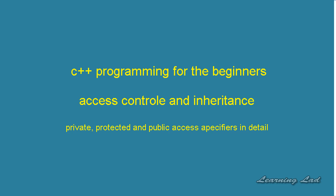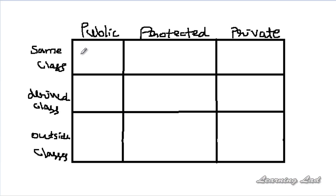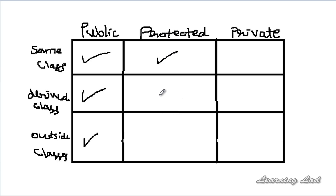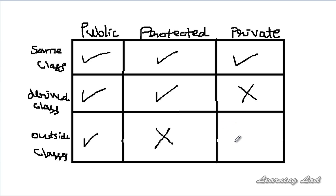We can summarize the different access types according to where we can access them. A public member is available in the same class, in the derived class, and also accessible outside the class. A protected member is available in the same class where it is defined and in the derived classes, but not available outside the class — neither outside the base class nor outside the derived class. A private member is available only inside the class, not in the derived class and not outside the class.